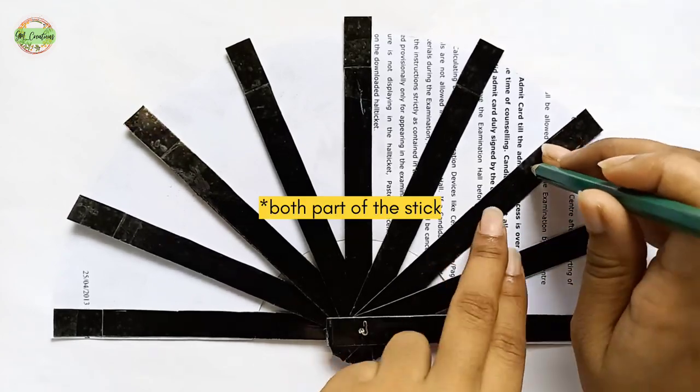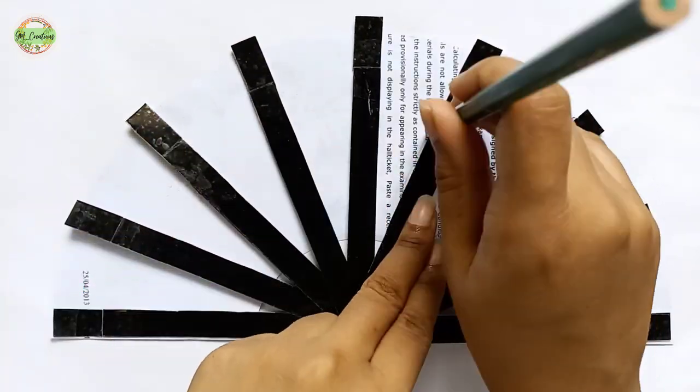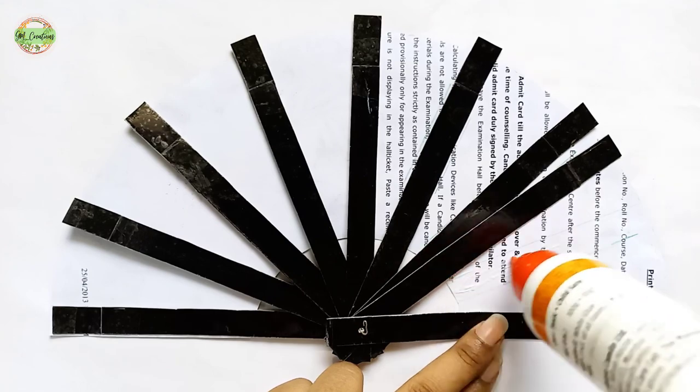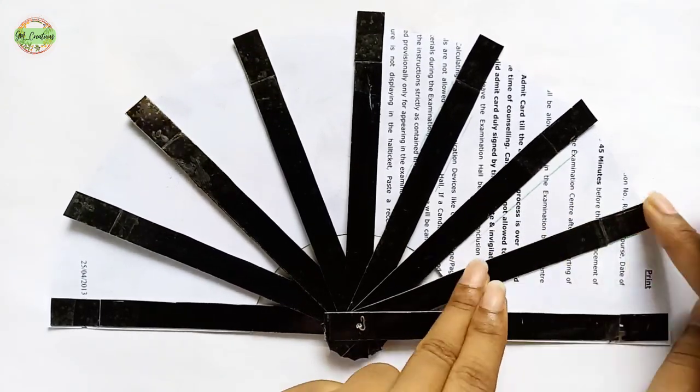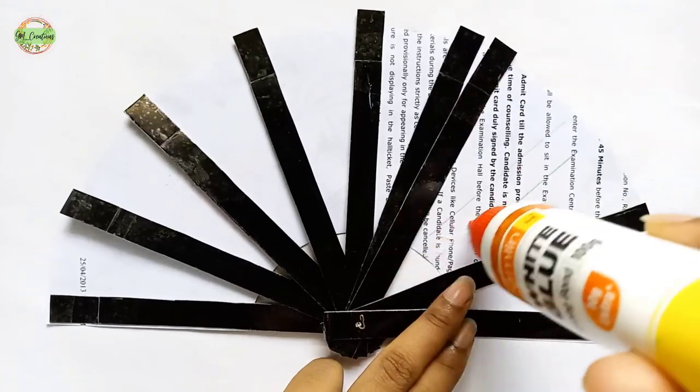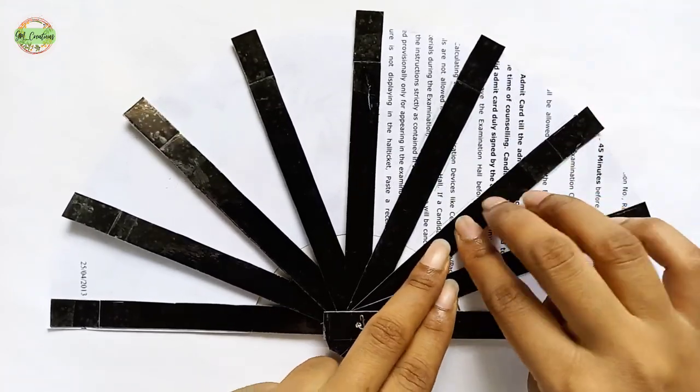Since the top part of the sticks is covered with tape, to insert this stick firmly to the paper, just press them down or place something heavy on them for a while. This will help the glue bond securely.